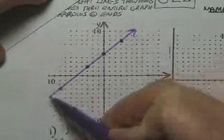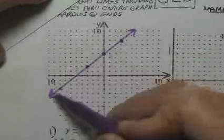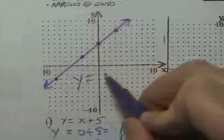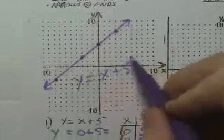So now I'll take a straight edge. You can use an ID card, credit card, whatever you've got. And go through all the points, through the entire graph, all the way to the very edges — and then put arrows at the very end. This graph is this equation, which is y equals x plus 5. So this equation is represented by this graph, and all these points on the line are answers to this equation — they're the solutions, x and y.